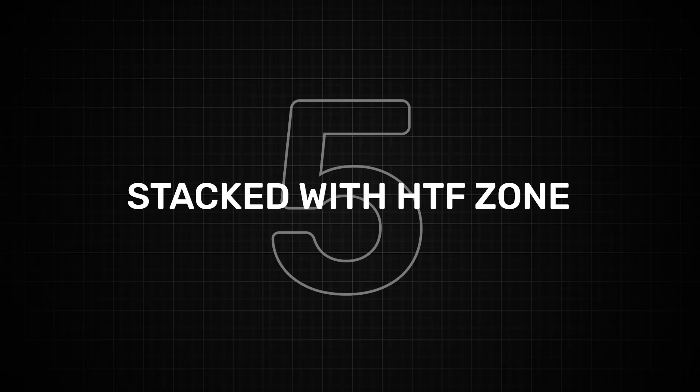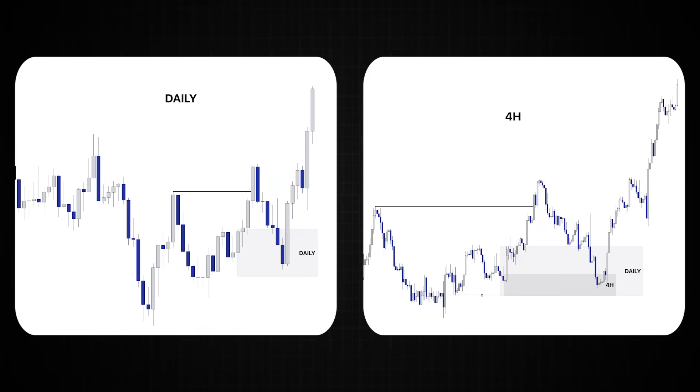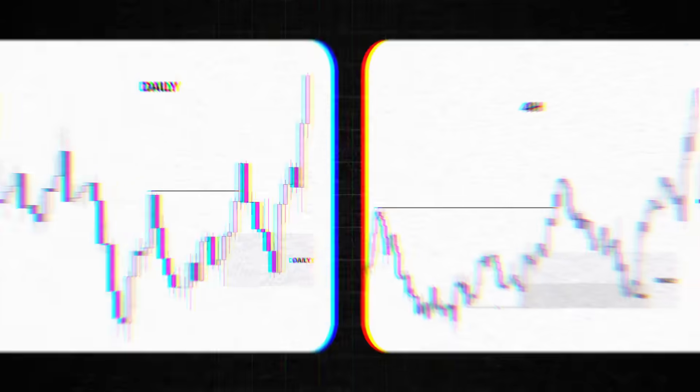Number five is the zone stacked with another high time frame zone. The more you can stack zones across time frames the more orders there should be in that area increasing the probability of the move.